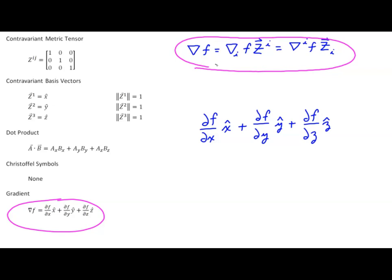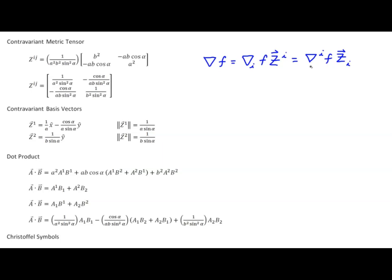Let's move on to affine coordinates. Here we'll work through the result using our covariant basis. The contravariant derivative is really the contravariant metric tensor z^{ij} times the covariant derivative with respect to j, which is just the partial derivative of our function f with respect to z_j, multiplied by the covariant basis vector z_i. To get the result, we're going to have to walk through each of the components of our contravariant metric tensor. I like to use the form that has no fractions in it, and multiply by the outside factor when we're done.